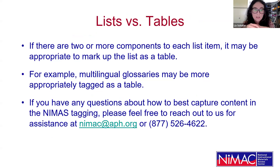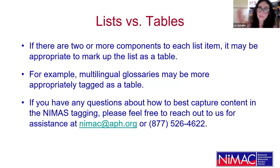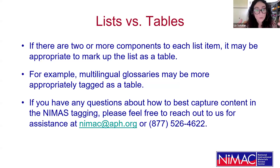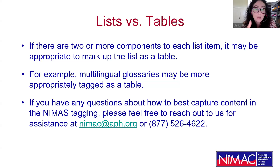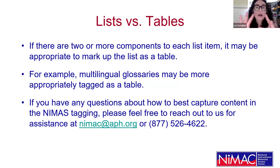Here's a sample glossary snippet where you can see how the glossary is nested alphabetically — quite common. You'll have the alphabetic division tag followed by a header of the letter, then the DL tag below that wrapping all of the terms and definitions that fall under that alphabetic heading. If there are two or more components to each list item, it might be more appropriate to mark up the content as a table. For example, multilingual glossaries may be more appropriately tagged as a table to capture the complexity of the information.